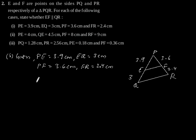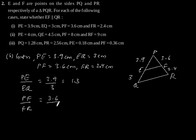So here PE by EQ is equal to 3.9 by 3 which is equal to 1.3, and PF by FR is equal to 3.6 divided by 2.4 which is equal to 1.5.